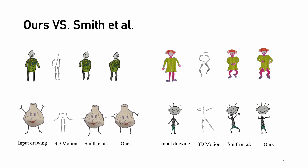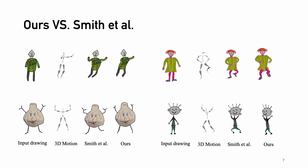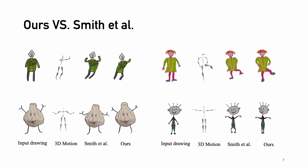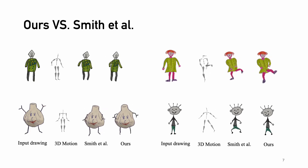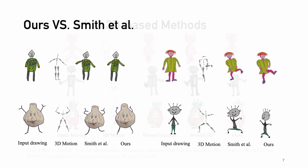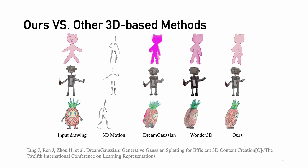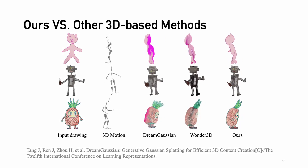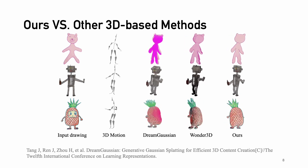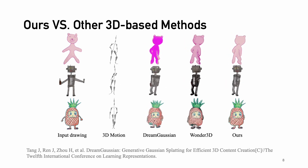Let us examine more comparison results between our Drawing Spin-Up and existing 2D and 3D animation methods. Compared with Smith et al., which only exhibits planar motion projected from 3D motion of the limbs and fails to capture tilting of the body or head, our method produces plausible 3D-aware animations that faithfully reflect the provided 3D motion. Compared with DreamGaussian and Wonder3D, which always generate messy textures due to contour ambiguity, our method maintains consistent styles with the input drawings and produces natural contour lines.